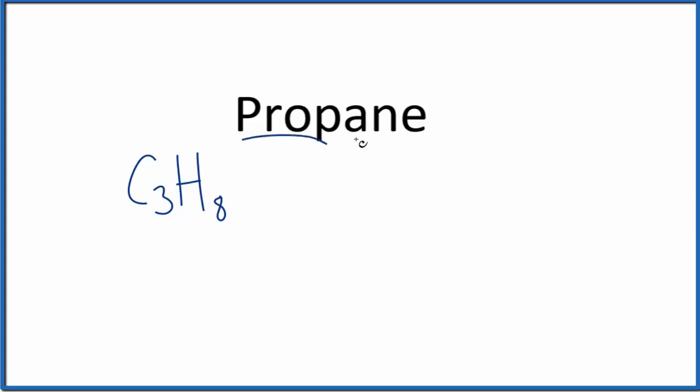Prop, that means three, and then ane, that tells us we're going to have all single bonds, carbon and hydrogen. So we have the molecular formula. Let's write the structural formula.